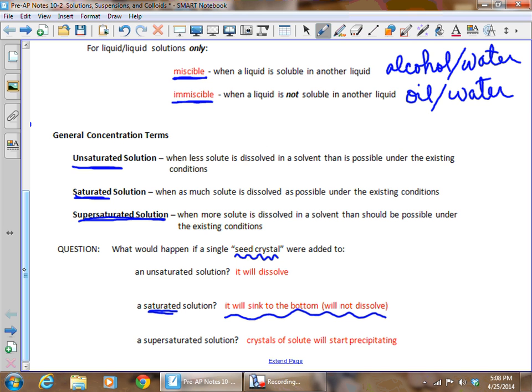If we put it into a supersaturated solution, depending on the type of solution, sometimes we'll get crystals of solid to start precipitating, coming out as a solid. This can happen very slowly. You can make rock candy this way by putting a stick into a supersaturated sugar solution, and over time it will form crystals on the stick. Sometimes it can happen very rapidly, and crystals will start snowflaking out of the solution or star bursting.